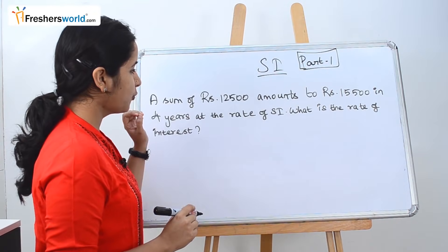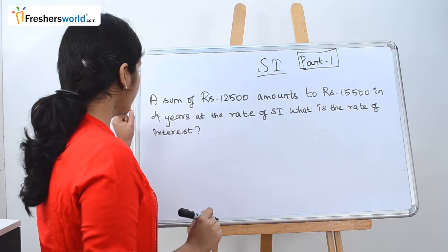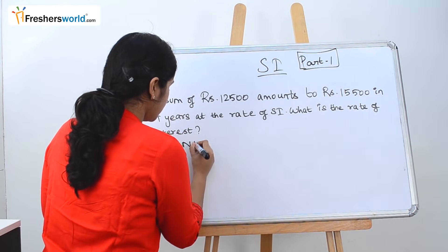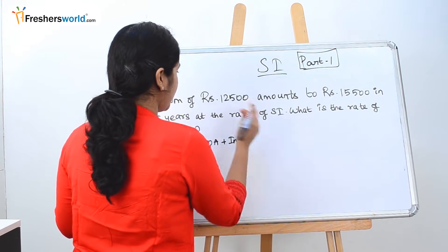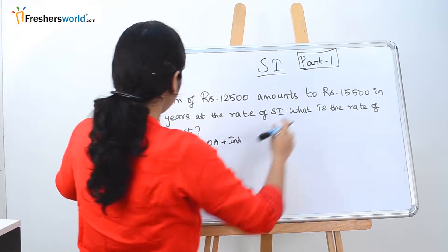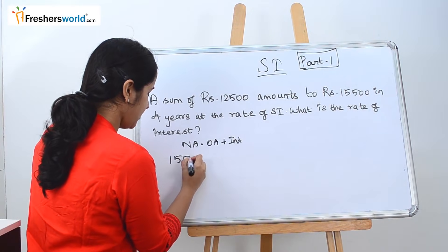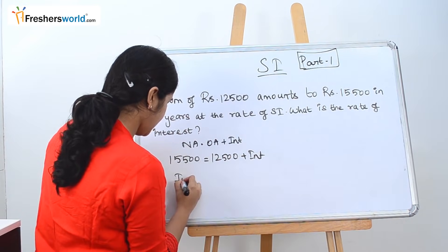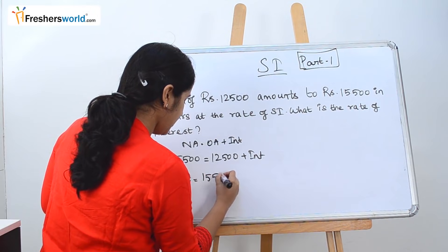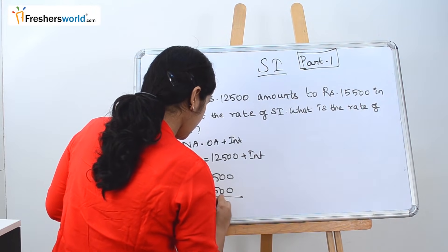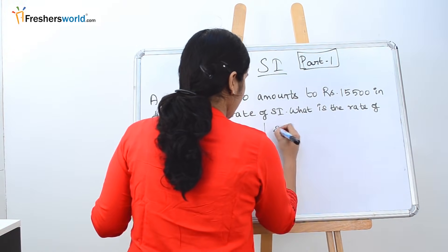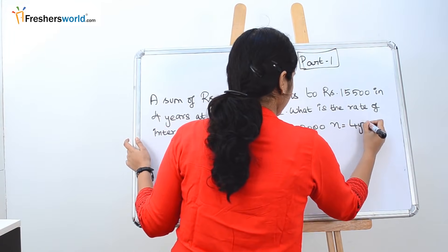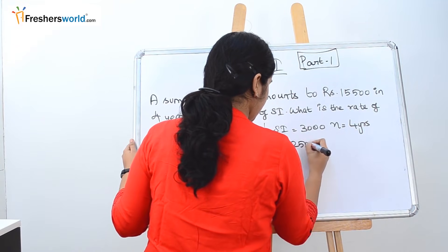Let's solve another sum. A sum of 12,500 rupees amounts to 15,500 rupees in 4 years at the rate of simple interest. What is the rate of interest? We know that new amount equals old amount plus interest, so 15,500 equals 12,500 plus interest. Therefore, interest equals 15,500 minus 12,500, which is 3,000 rupees. The number of years is 4 and the principal is 12,500. Now we have to find the rate.